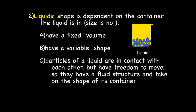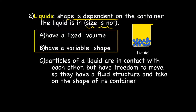State of matter number two is liquid. Liquids are slightly different than solids in that the shape of a liquid is dependent on the container the liquid is in, but the size or volume of the liquid is not. Which means that liquids have a fixed volume but a variable shape. The volume is the amount of space something takes up — how much of it there is. So you can't change the volume of a liquid, but you can change the shape.